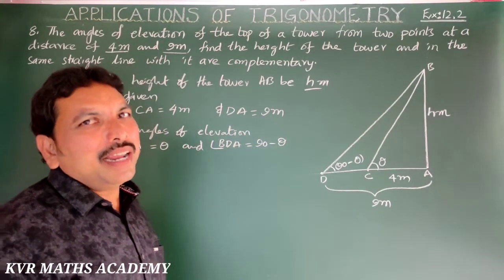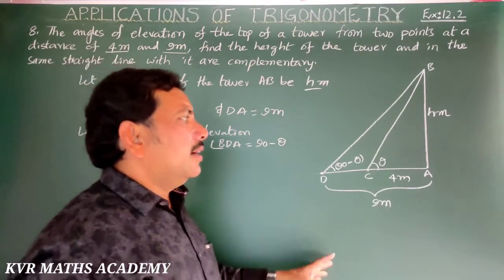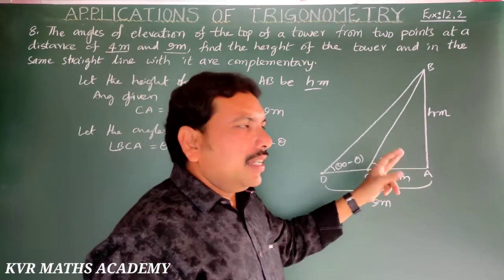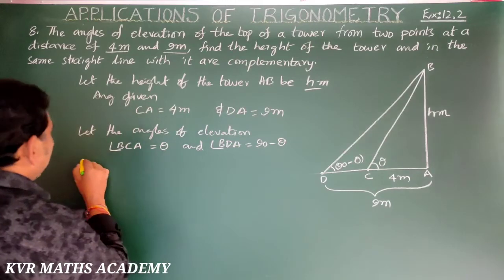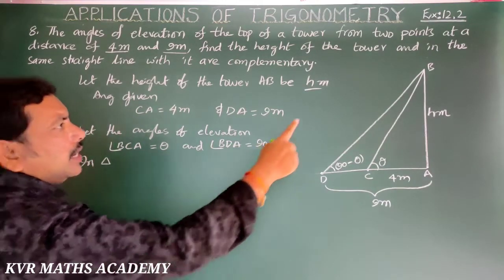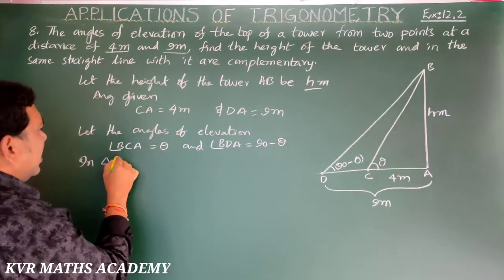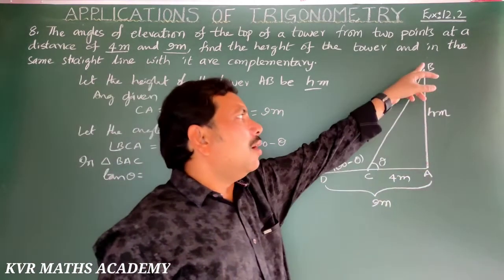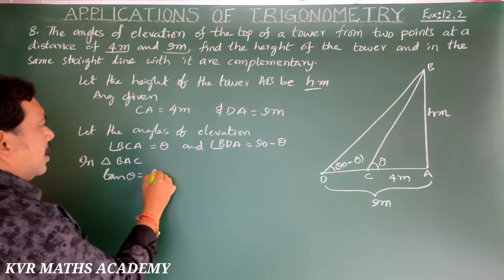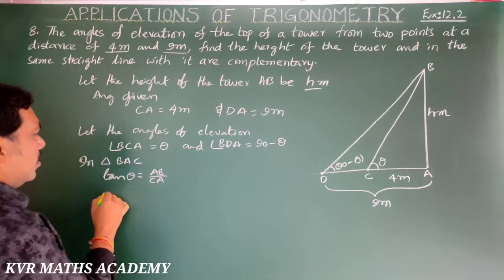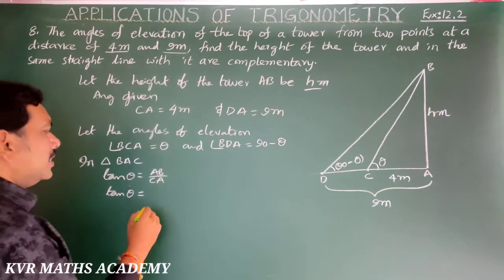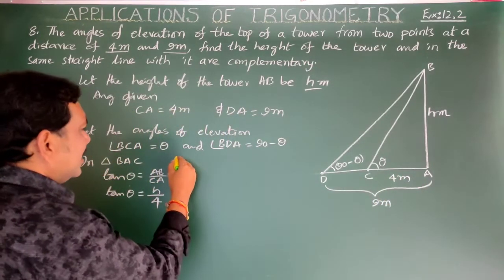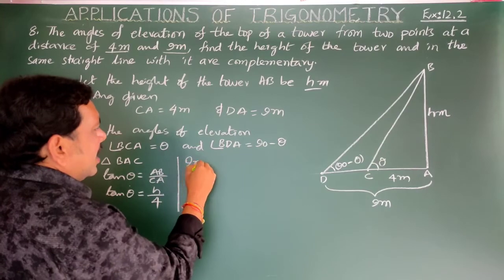For angle theta, AB is the opposite side and CA is the adjacent side. Taking triangle BAC: tan theta = opposite side AB by adjacent side CA. That gives tan theta = h/4. This is equation number one.